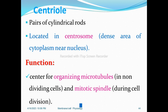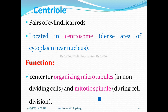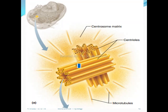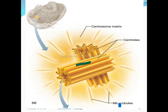Another organelle is the centriole — a pair of cylindrical rods located in the central zone, which is a dense area of cytoplasm. It is a center for organizing microtubules. The centrosome is the cytoplasmic area around the nucleus, and it is a part of the cytoskeleton.